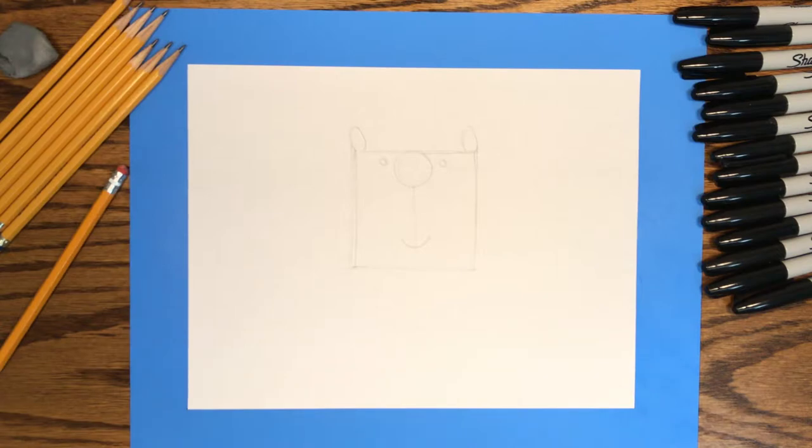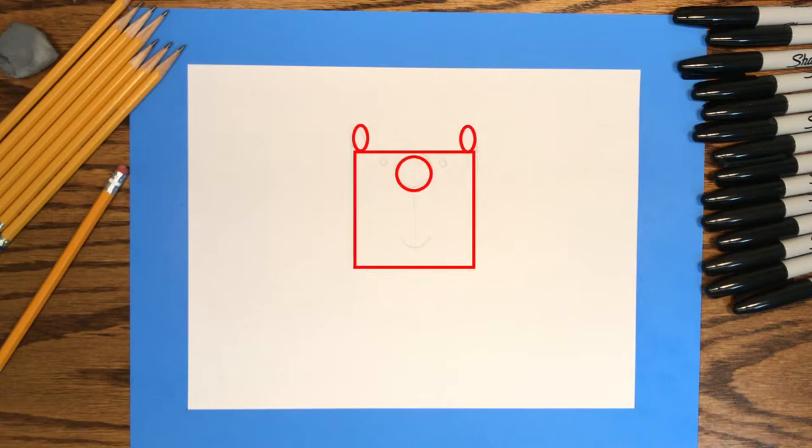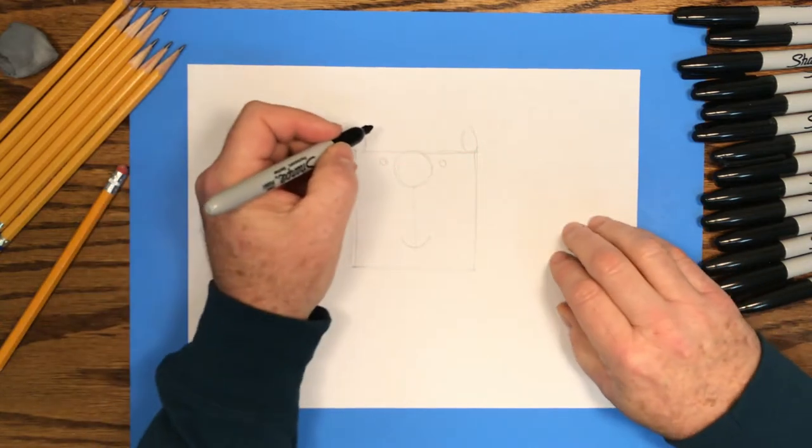If your shapes look like the ones here, then you're ready to go to the next step. Put down your pencil and pick up your black marker.